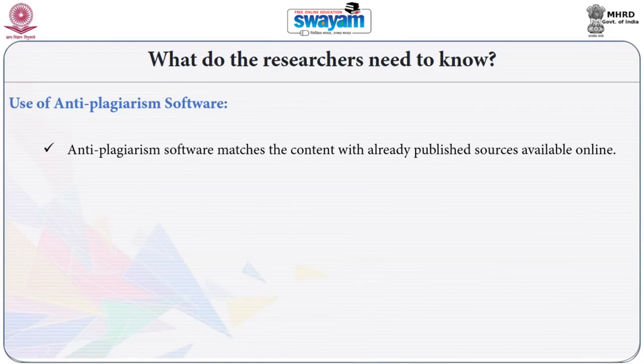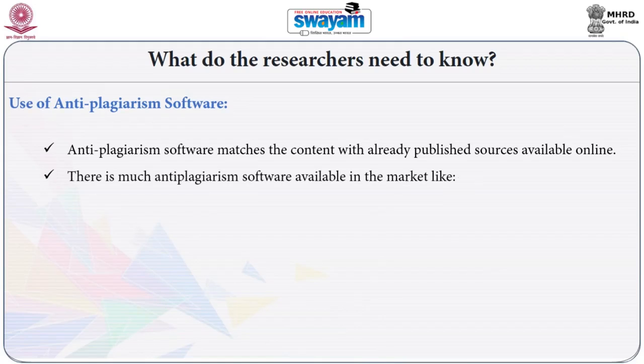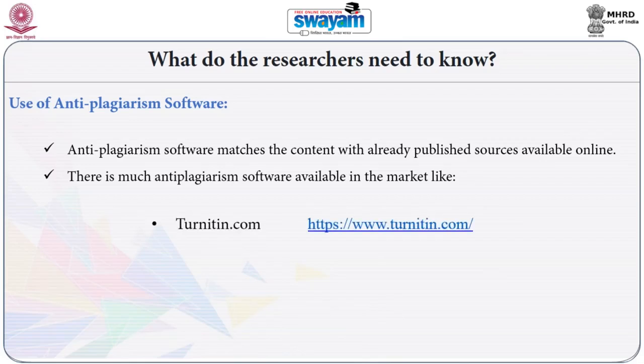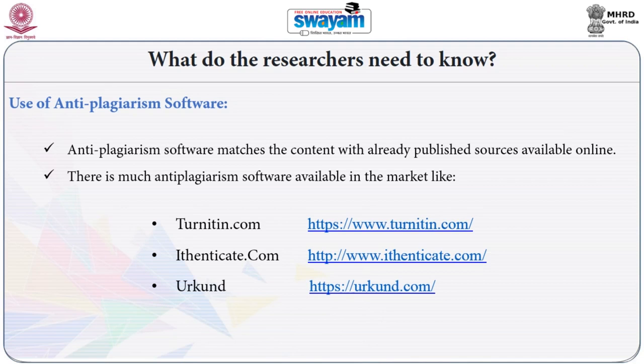Anti-plagiarism software matches content with already published sources available online. There are many anti-plagiarism software available in the market, such as Turnitin.com, Authenticate.com, Urkund, and others.